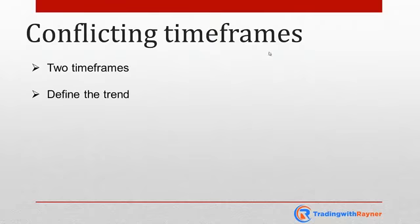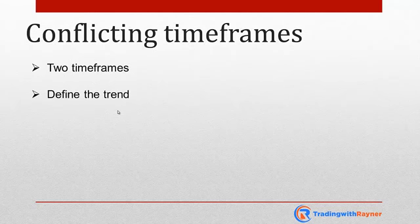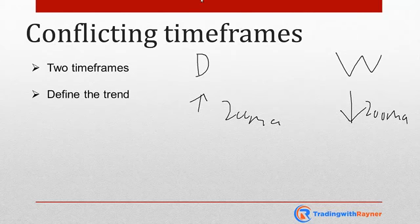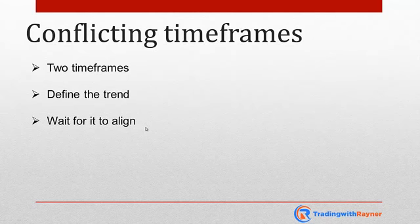The third thing: what if you define the trend and realize there's still a conflict? For example, on the daily timeframe the market is above the 200MA, but on the weekly timeframe price is below the 200MA. What do you do? One option is to wait for both timeframes to align before taking a trade. However, a downside of this approach is that you could miss a big move — if you're waiting for all the stars to align, you may not get many trading setups.